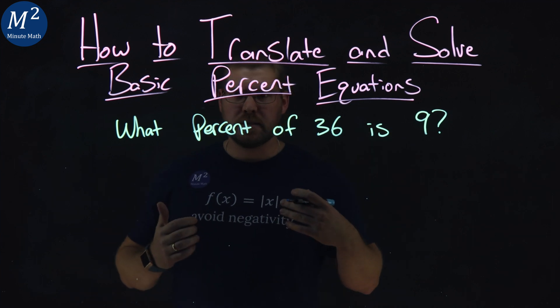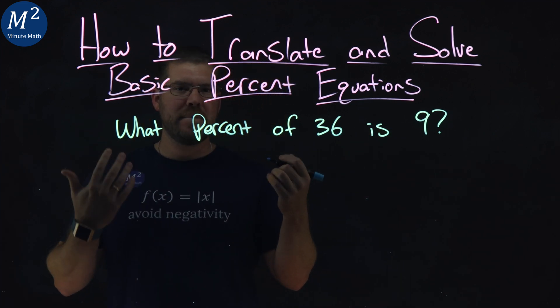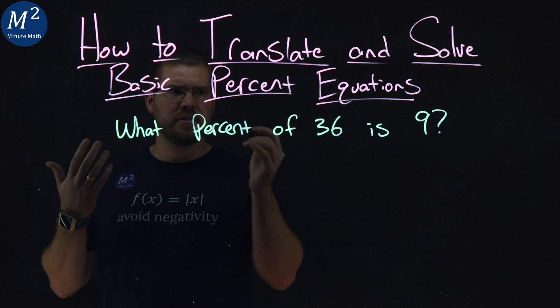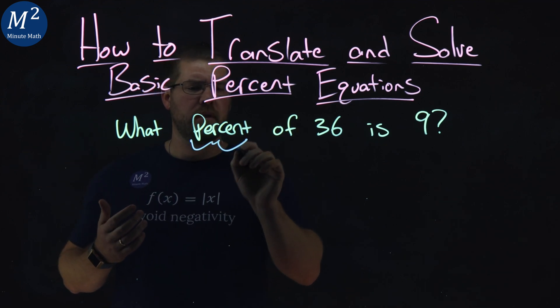What percent? Percent. We're going to call that the letter P. We're going to get a variable to that. What percent? We don't know what it is. P.